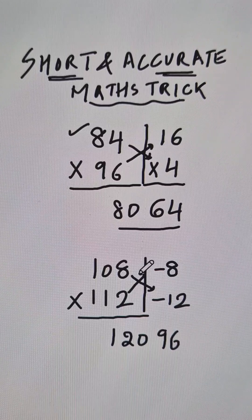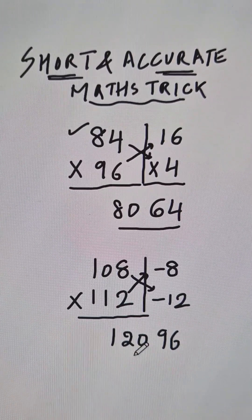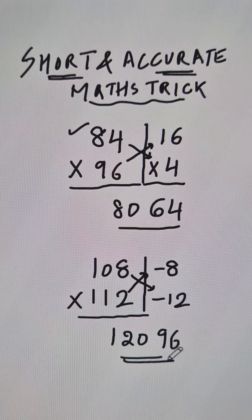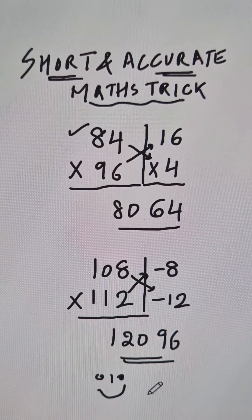You can subtract like this also: 112 minus negative 8 that will also give you 120, and the answer for the question is 12096. Isn't that an amazing short trick?